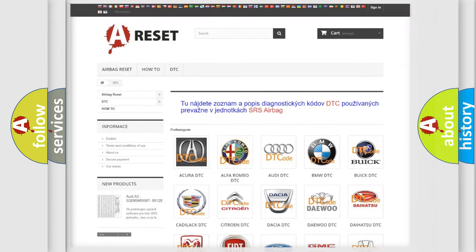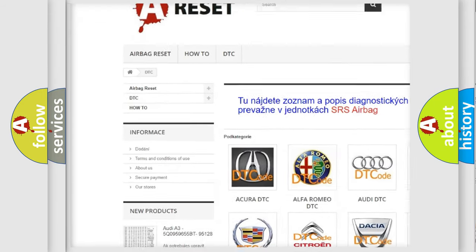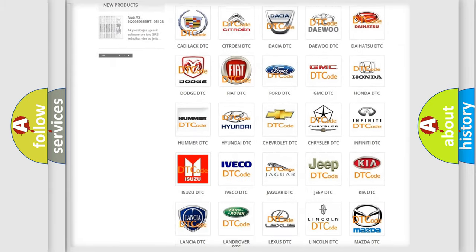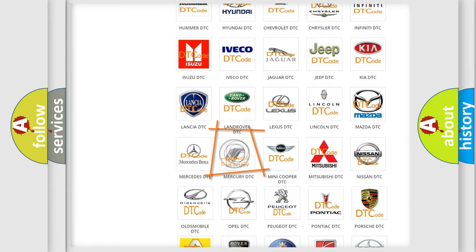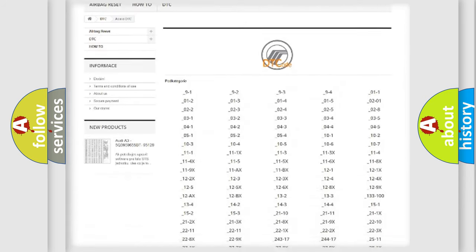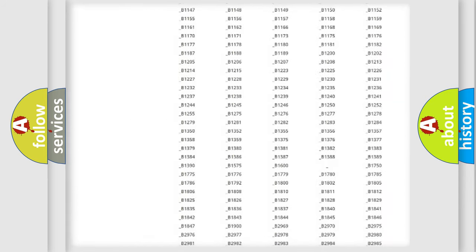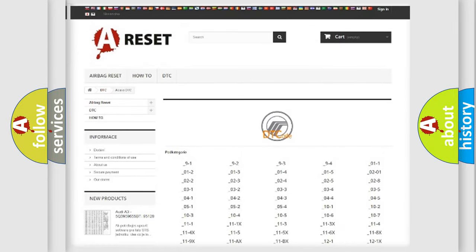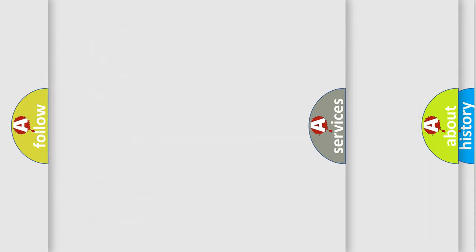Our website airbagreset.sk produces useful videos for you. You do not have to go through the OBD2 protocol anymore to know how to troubleshoot any car breakdown. You will find all the diagnostic codes that can be diagnosed in mercury vehicles, also many other useful things.